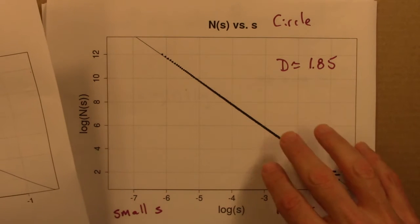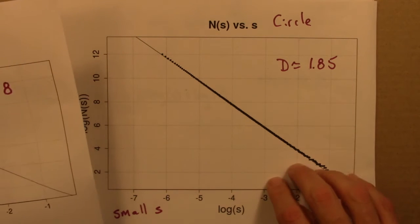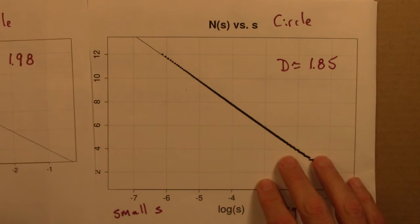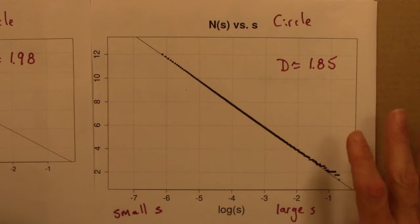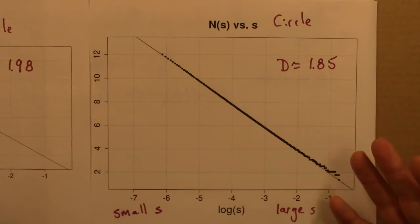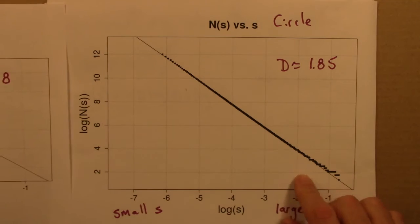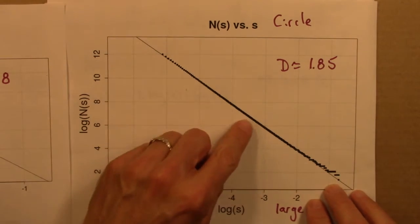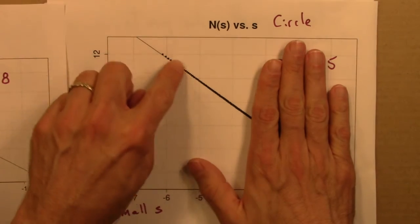But notice here that I'm benefiting from the fact that I know what the answer should be ahead of time. So that's sort of cheating. Often when we're doing science and we're measuring something, we don't know the answer before we measure it. That's why we're measuring it. So the question then is, how should I decide which data points to keep and which to get rid of?